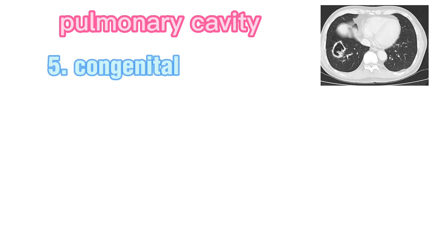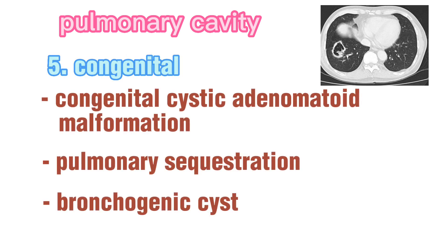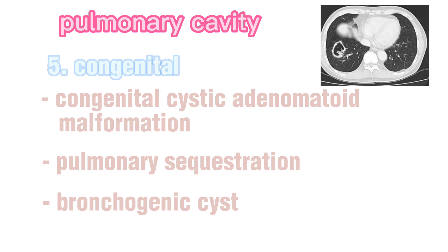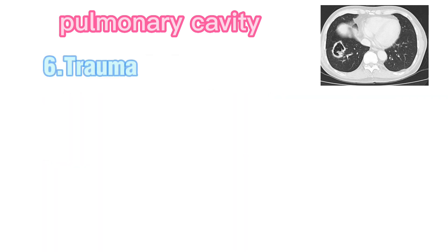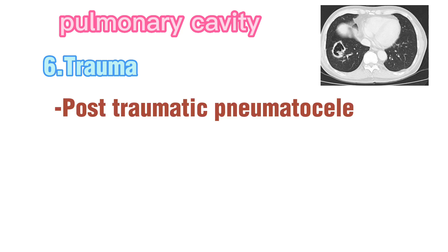Congenital causes include congenital cystic adenomatoid malformation, pulmonary sequestration, and bronchogenic cyst. Traumatic cause like post-traumatic pneumatocele, especially if it is thick-walled or there is secondary infection.